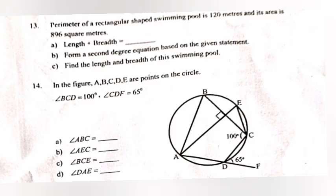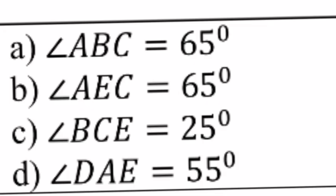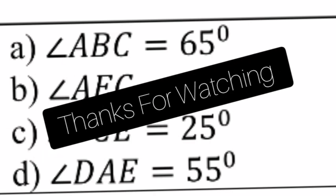Question 14: In the figure, A, B, C, D, E are points on the circle. Angle BCD equals 100 degrees, angle CDE equals 65 degrees. Part A: Angle ABC equals 35 degrees. Part B: Angle ABC equals 65 degrees. Part C: Angle BCE equals 25 degrees. Part D: Angle DAE equals 55 degrees. Thank you.